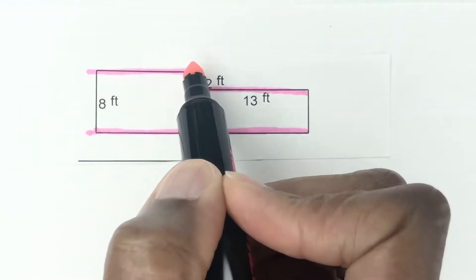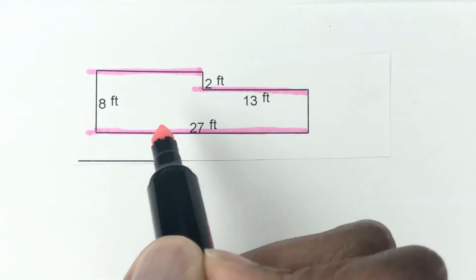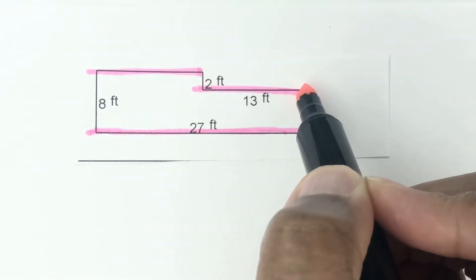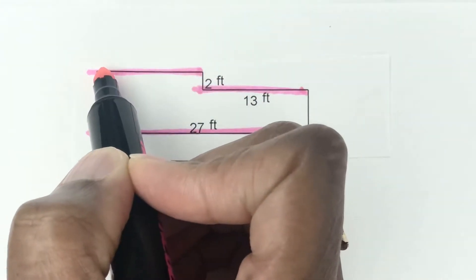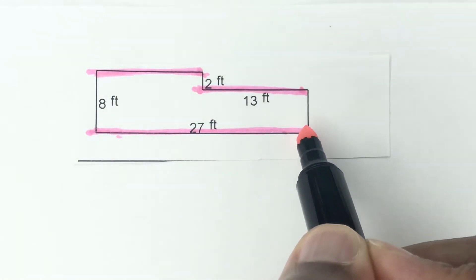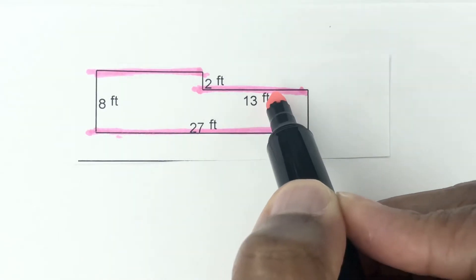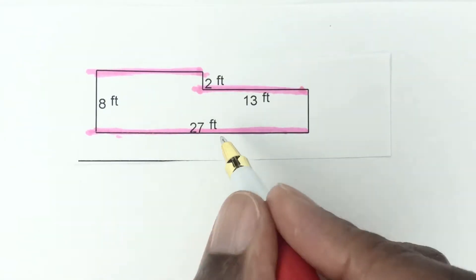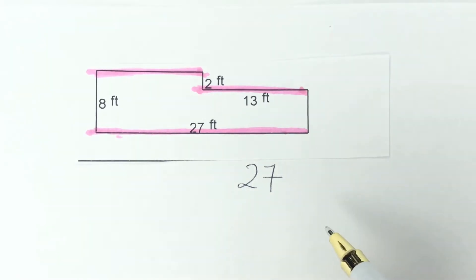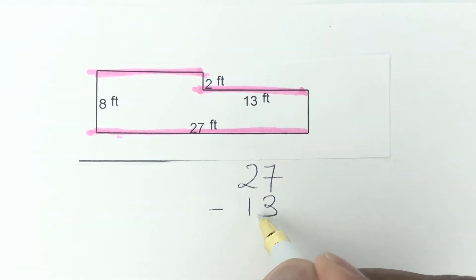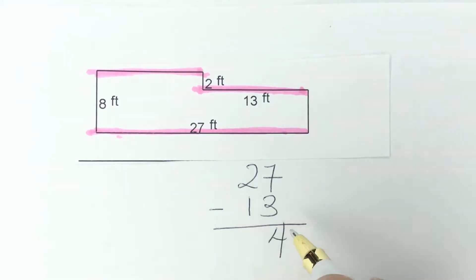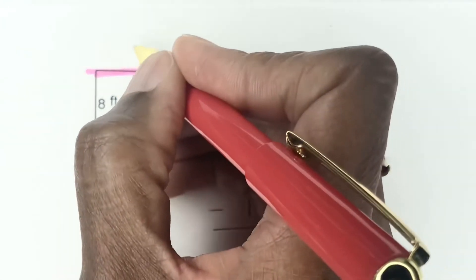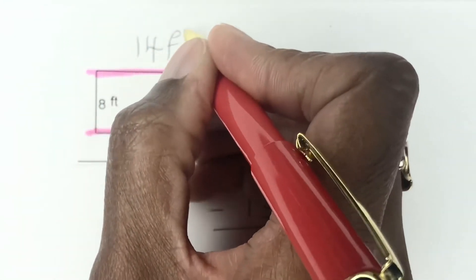We don't know the measurement of this side. We have 27 and we have 13, so 13 plus this missing side is going to give us a total of 27. The best thing to do is subtraction — subtract what you know to get what you don't know. So 27 minus 13: 7 minus 3 is 4, 2 take away 1 is 1. So this missing side is 14 feet.